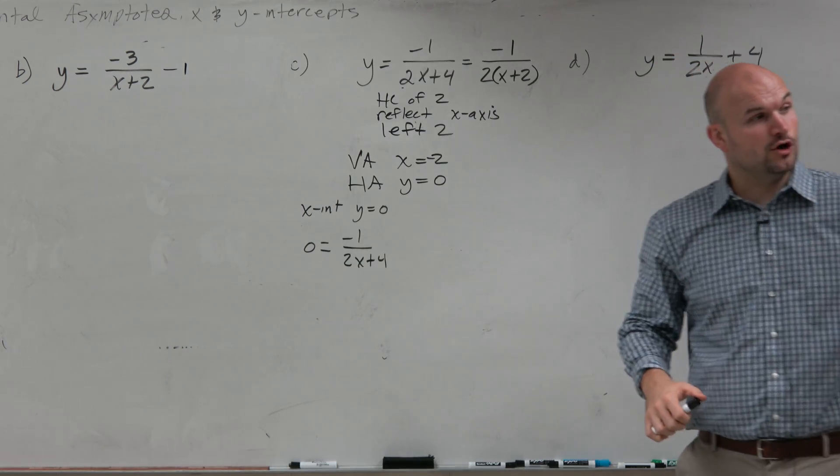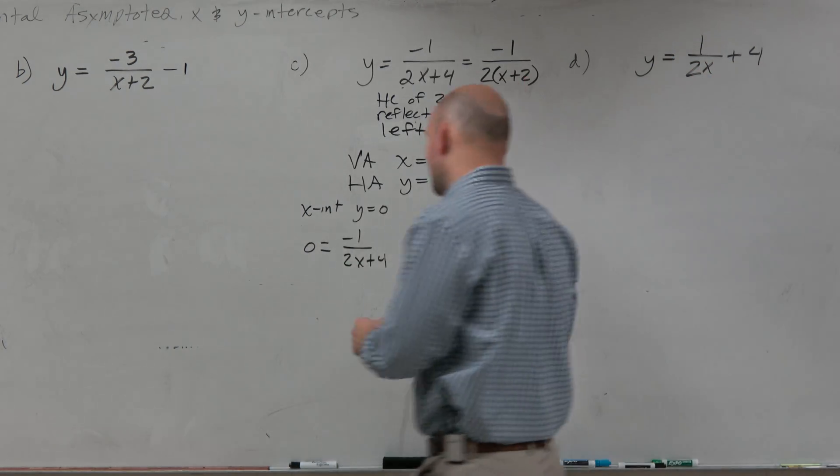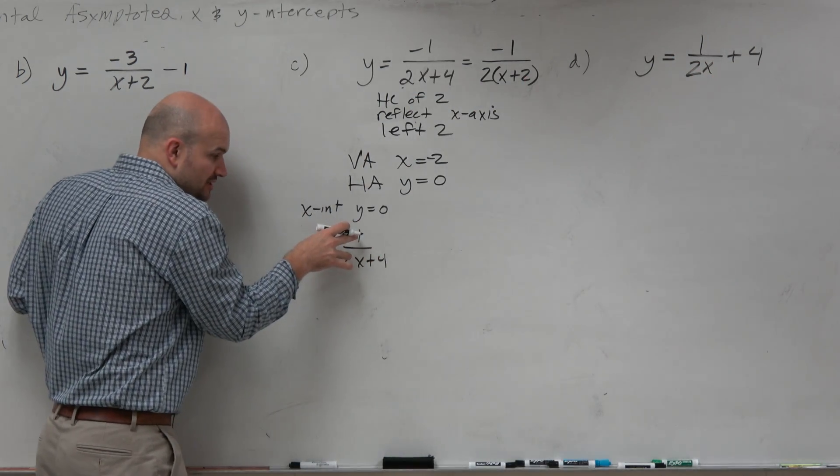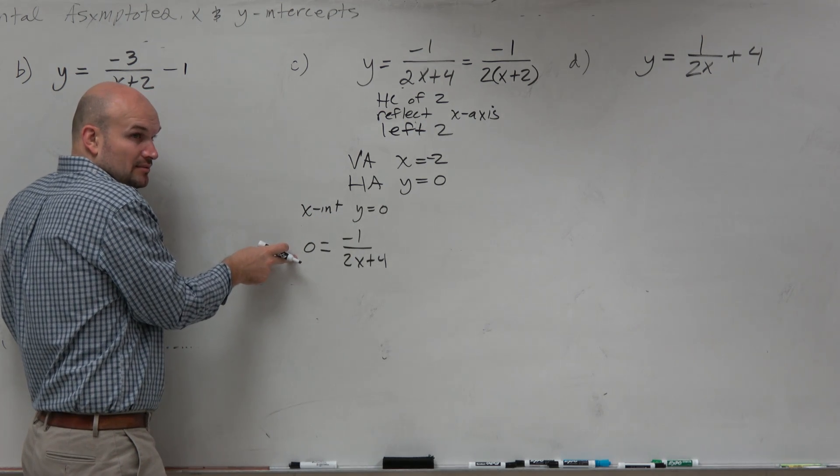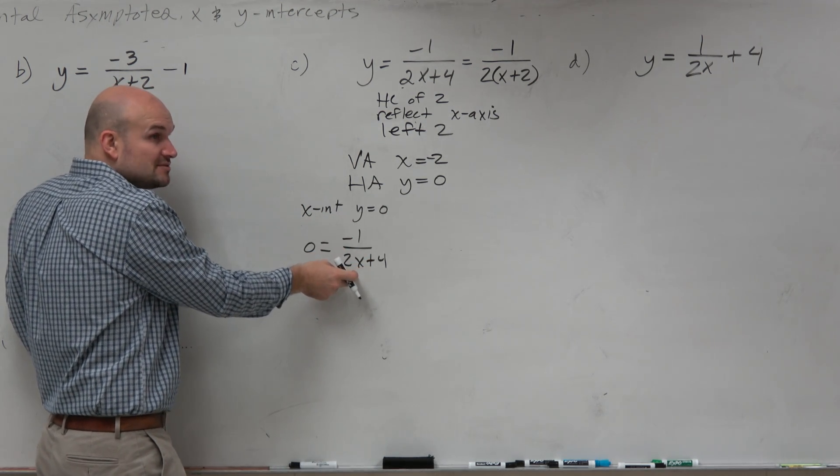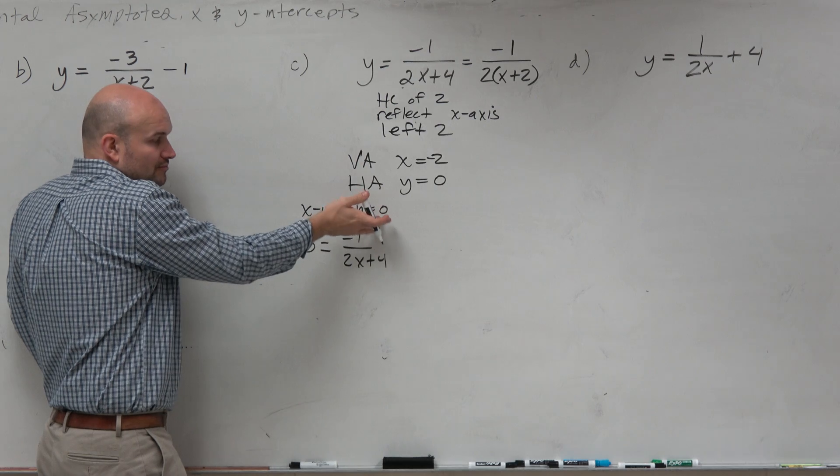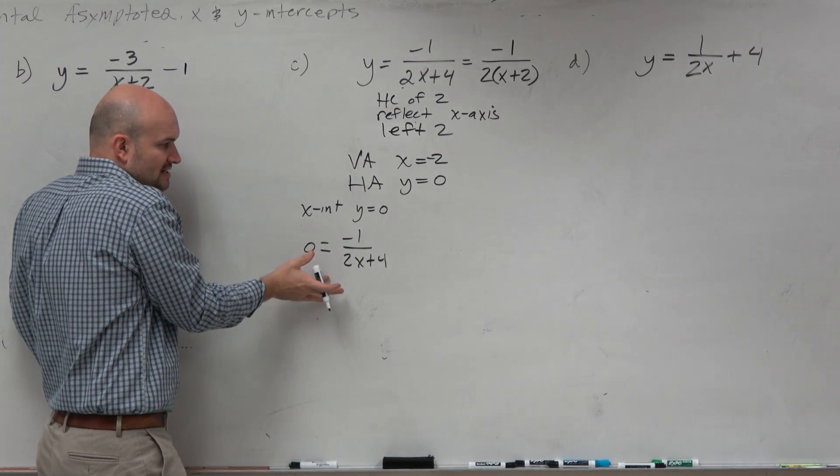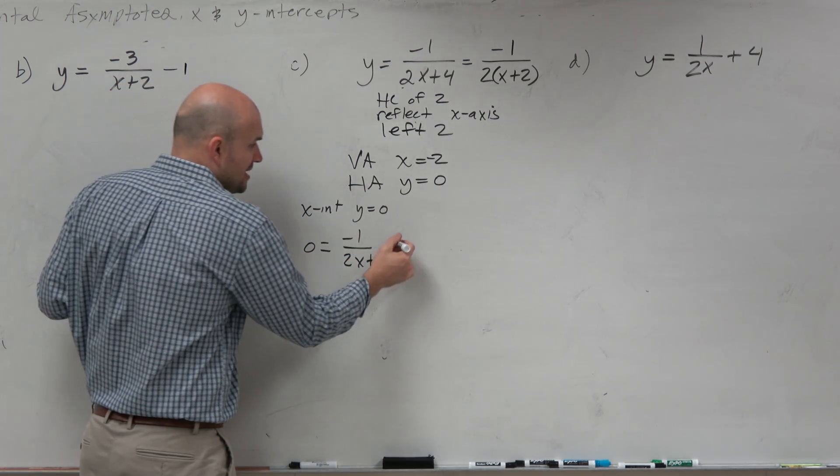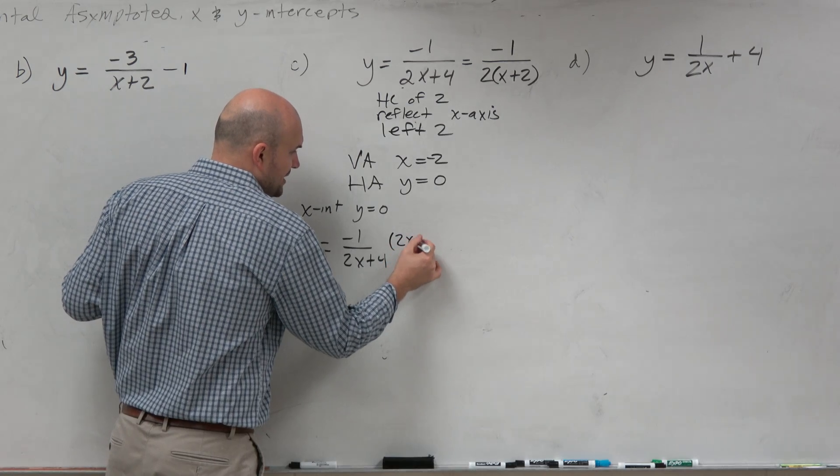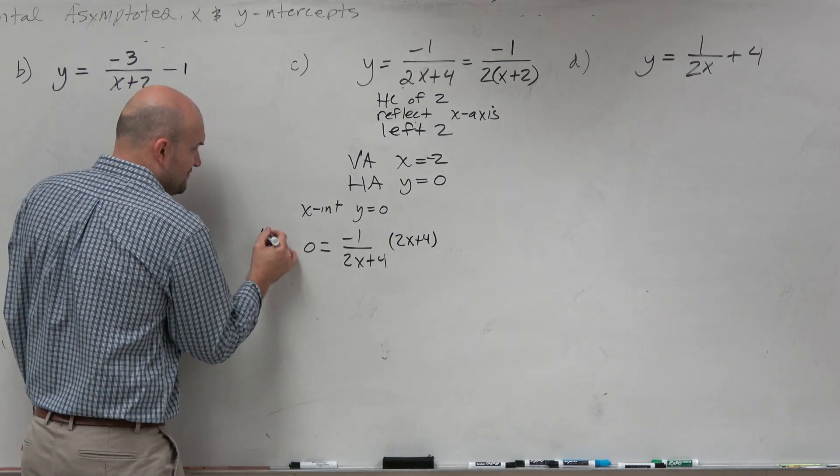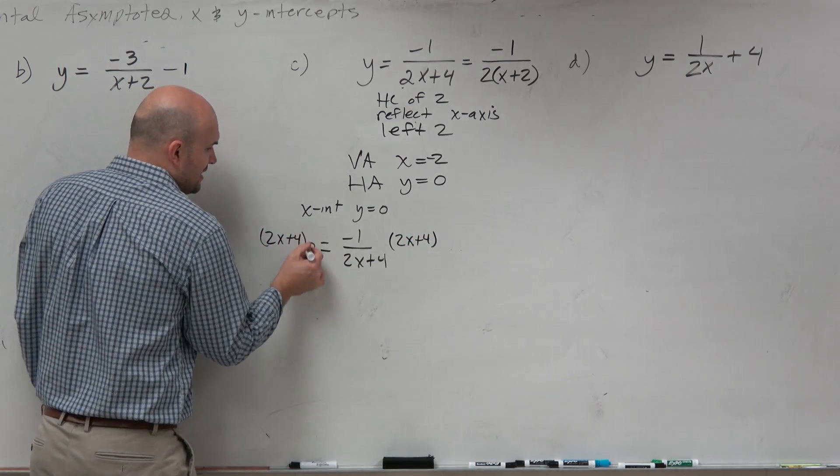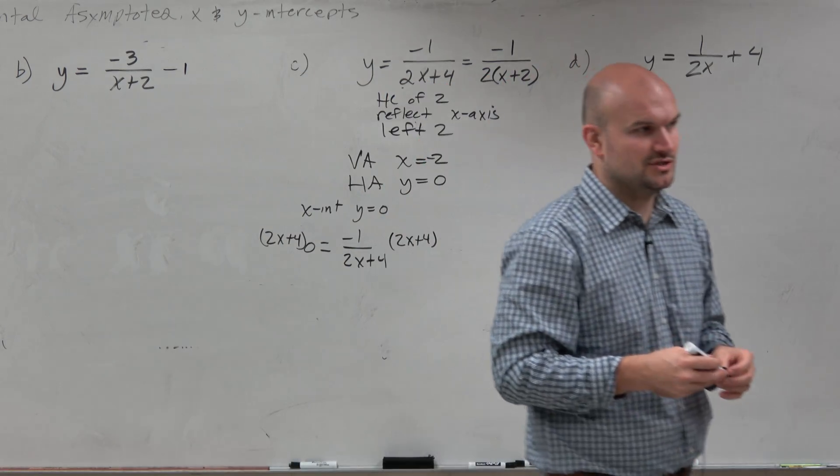because this is going to happen over and over and over again. What we have is we have a rational expression equal to 0. Now again, if I need to solve for x, right, that's you replace y with 0 and then you want to solve for x, I've got to get this off the denominator. So I'm going to multiply by my denominator on both sides. And something very, very interesting happens every single time we do this with a rational expression.